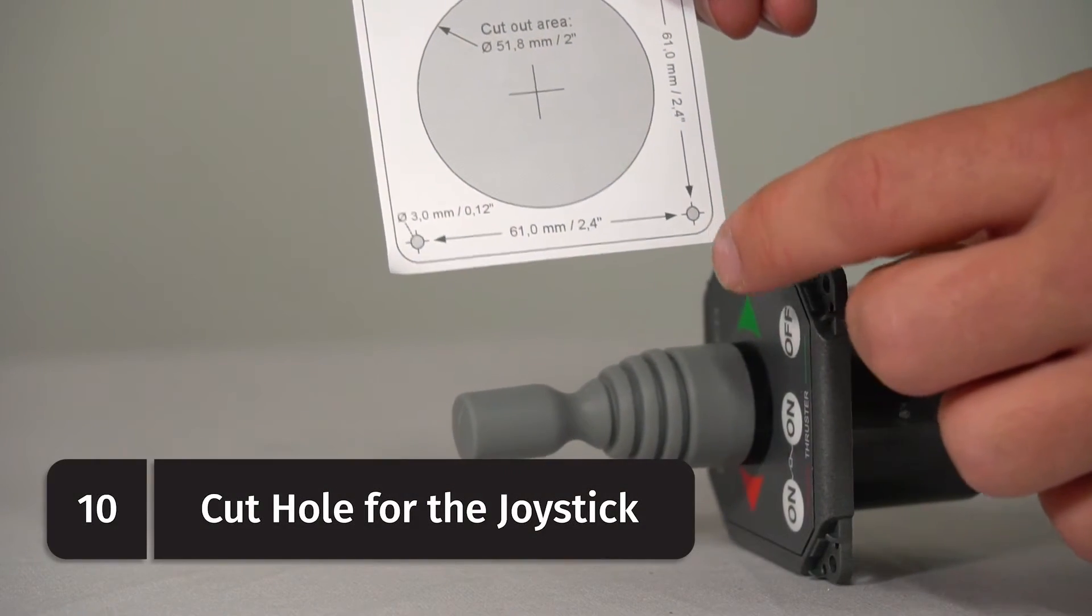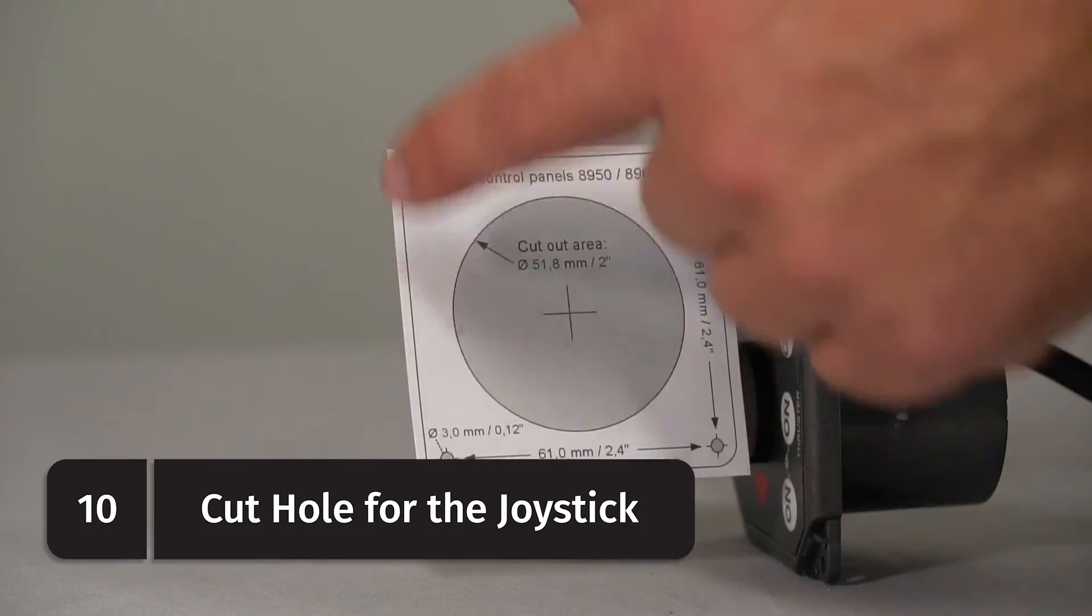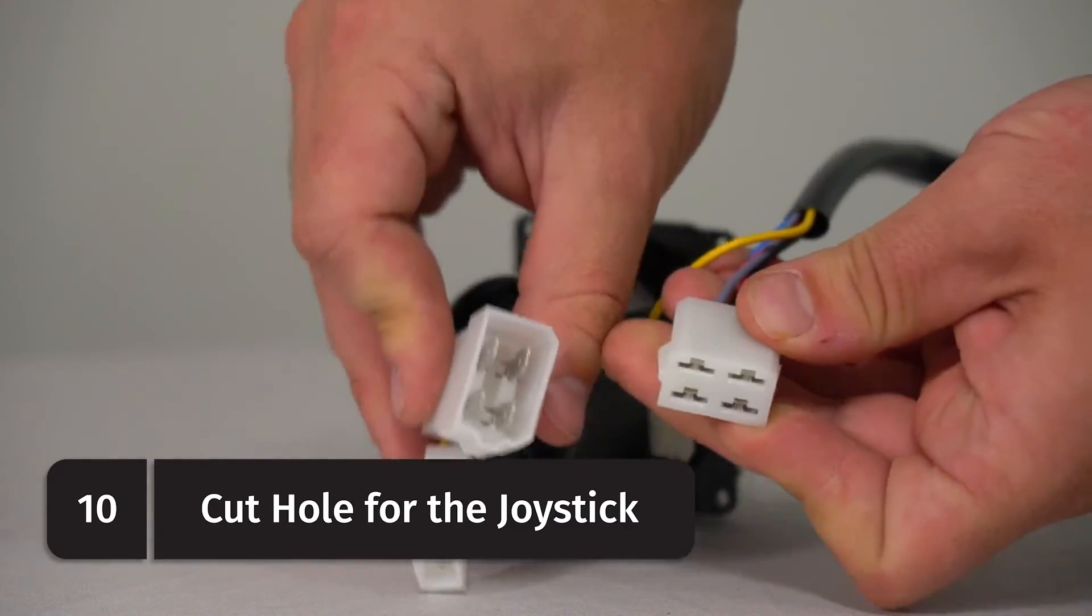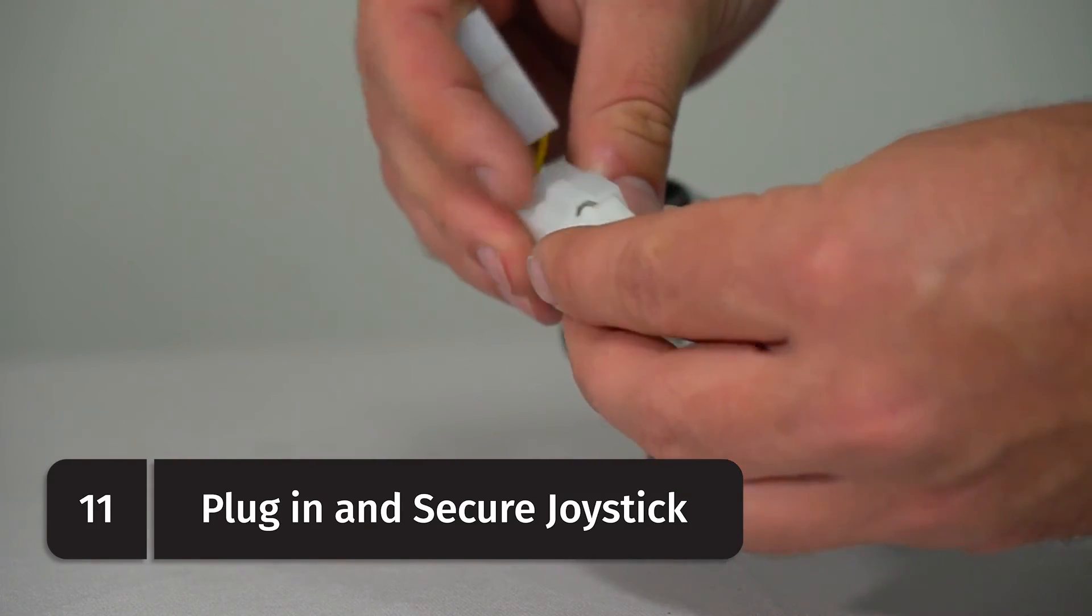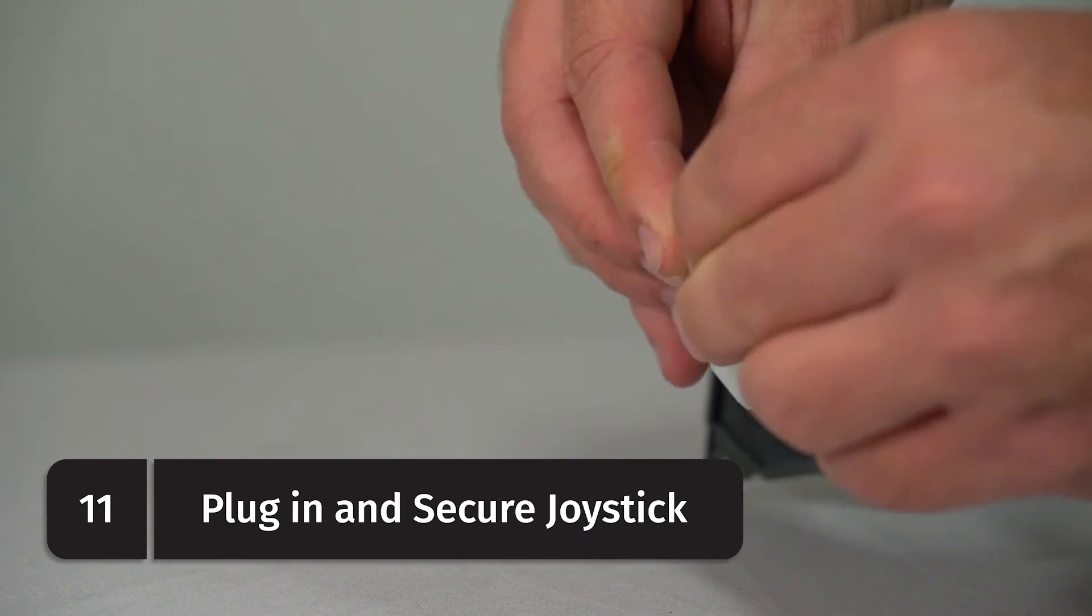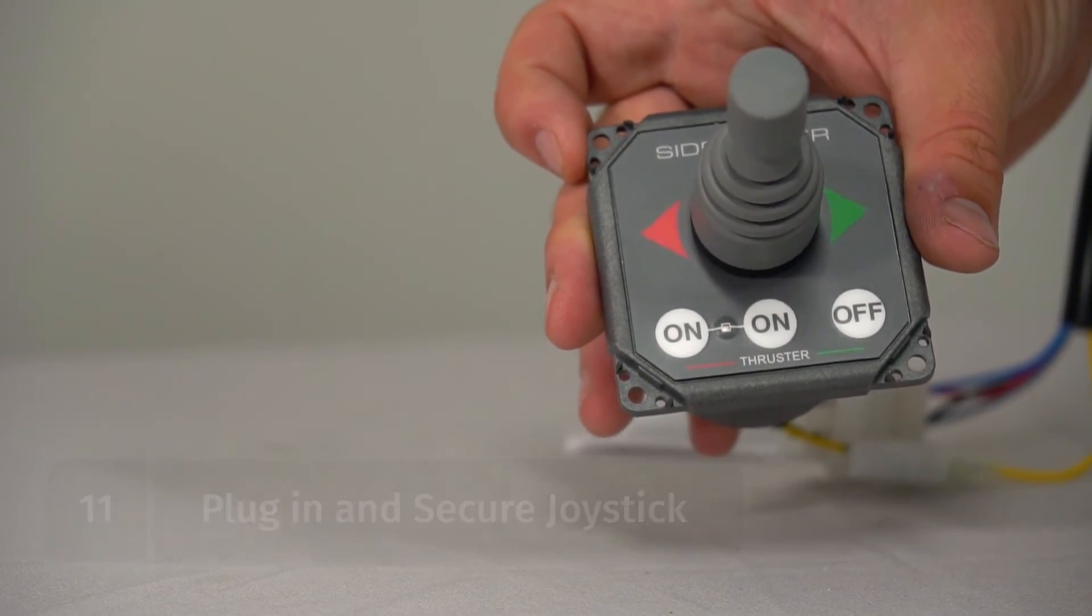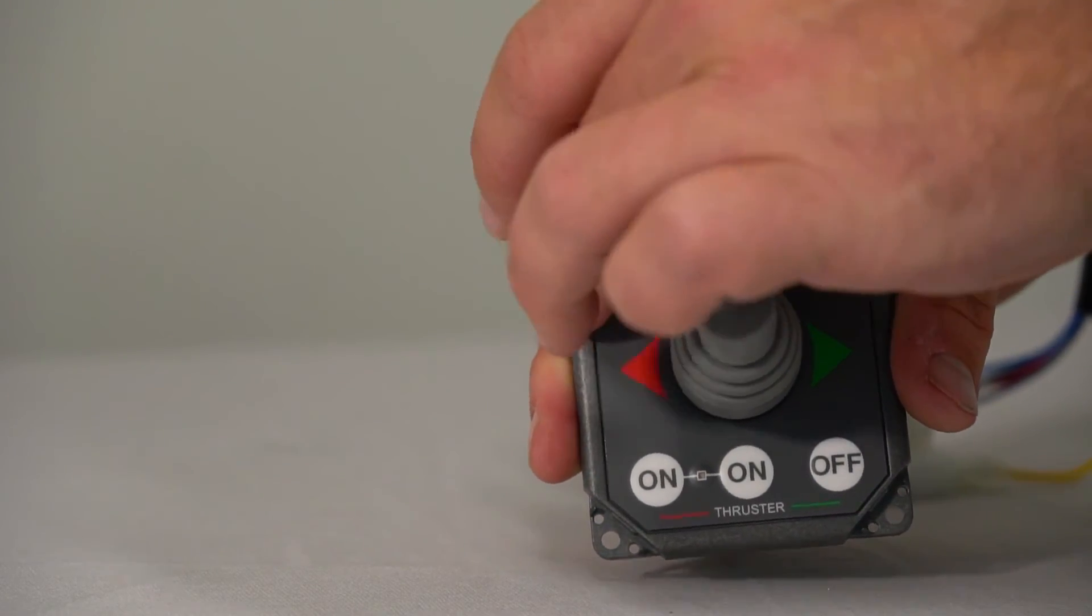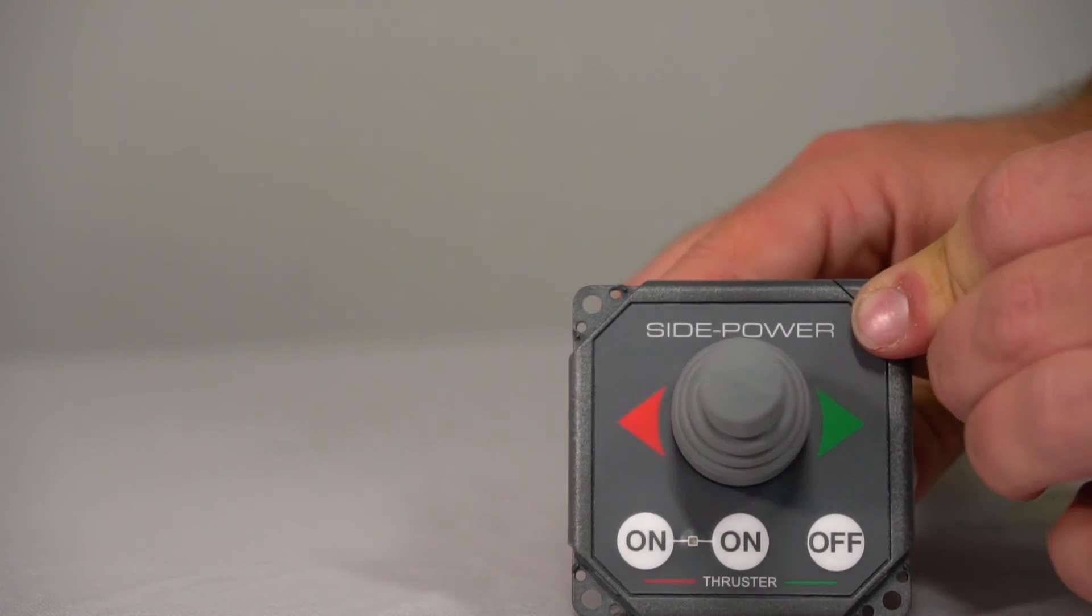To install the joystick, you'll use a two-inch hole saw for the cutout and four small screws in the corners will secure it in place. Simply plug the wiring harness into the joystick the same way you did on the motor and drop the joystick into the cutout hole. Then secure the four screws in the corners and cover them with the supplied corner covers for a nice clean look at your helm station.